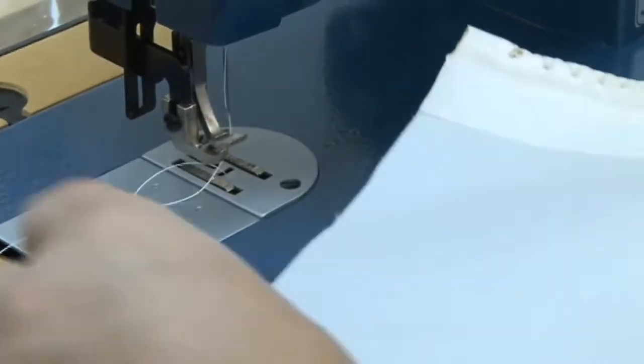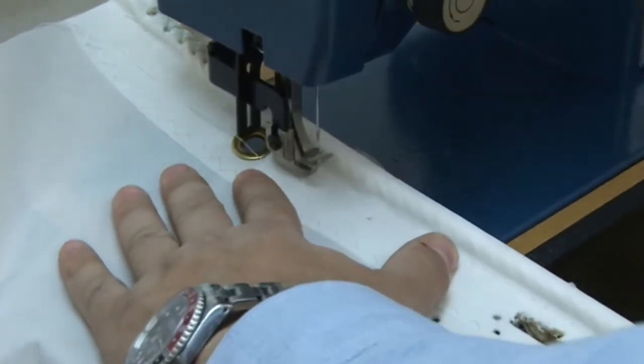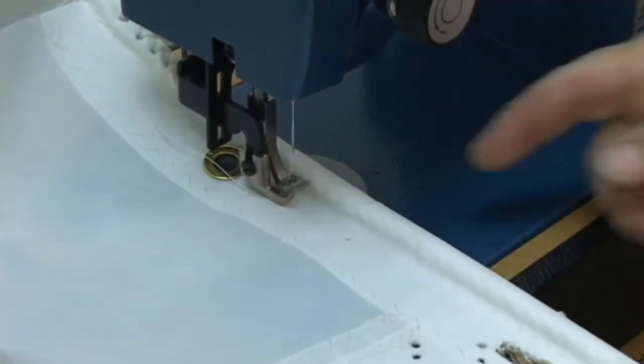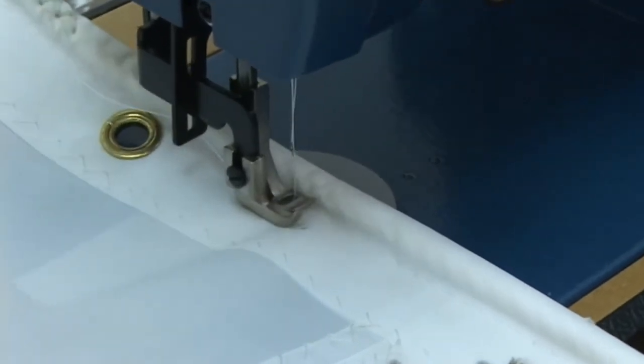So having this foot is going to allow you, and this has already been stitched but we're going to do it again so you can see it, drop the foot down and get the stitch right in at the neck of the bolt rope.